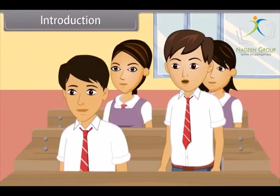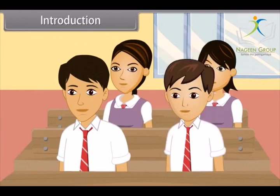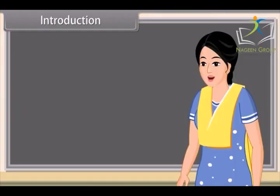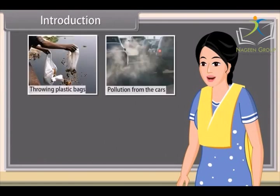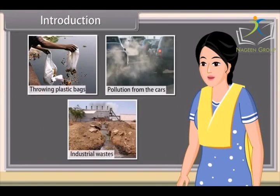How are we making this river polluted? Many of our activities destroy the clean state of rivers, such as throwing plastic bags, pollution from cars, and dumping of industrial wastes. Let us explore them in detail and their effects on our environment.